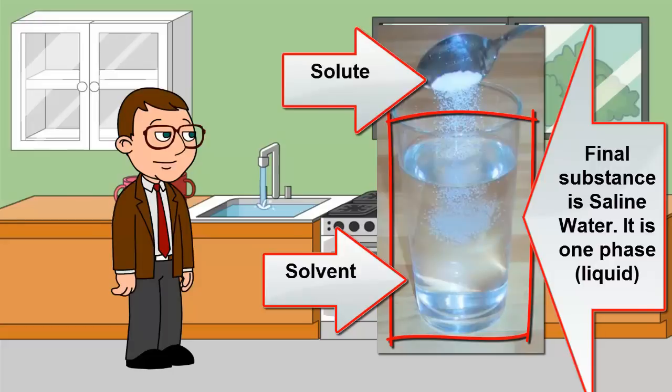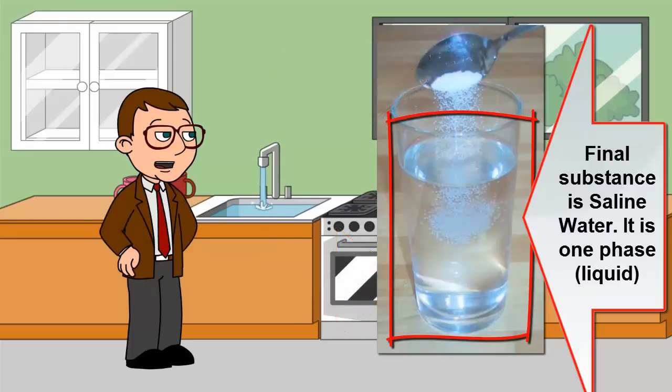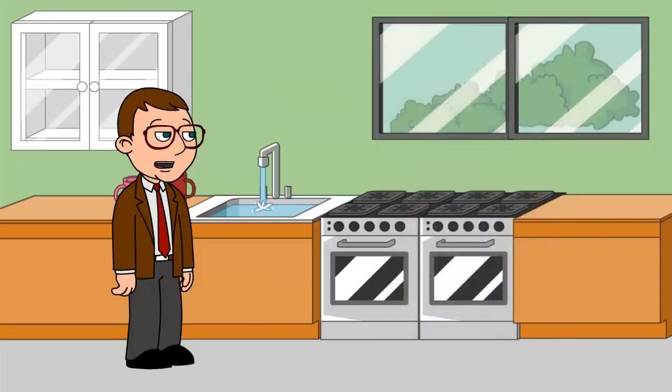If you mix water and salt, the salt is dissolved in the water. The water is the solvent and the salt is the solute. The new substance is saline water, but the salt and the water have not been chemically combined, so they can be separated again.